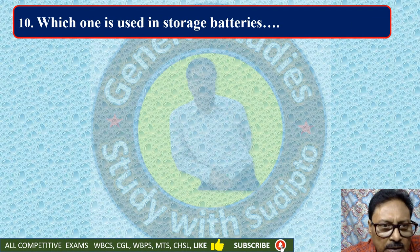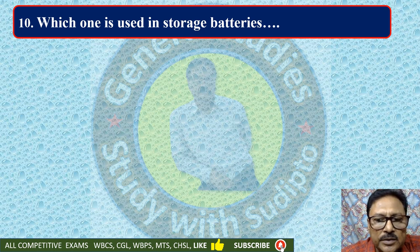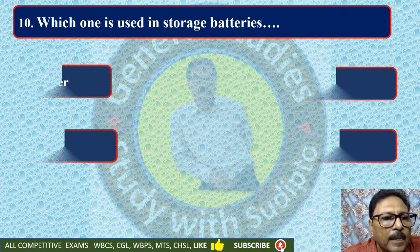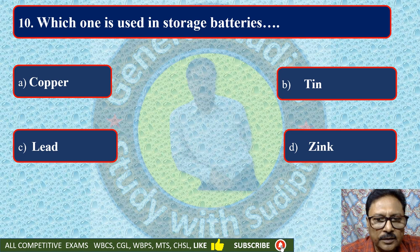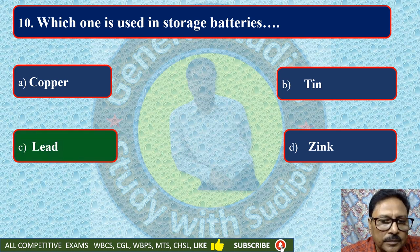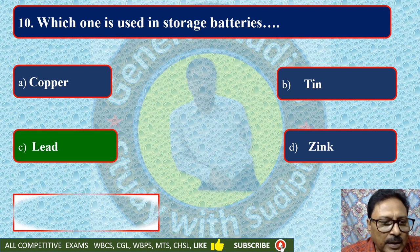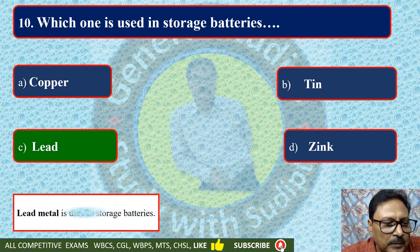Which one is used in storage batteries? Options are copper, tin, lead, or zinc. Lead is used in storage batteries. Lead metal is used in storage batteries.